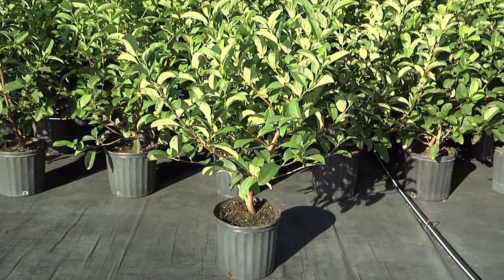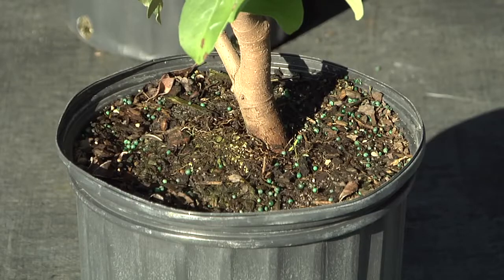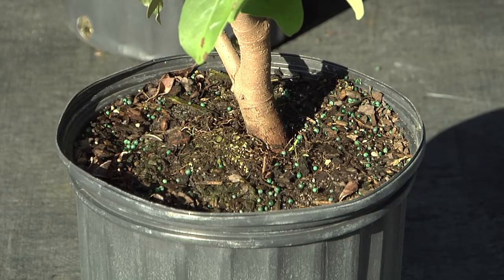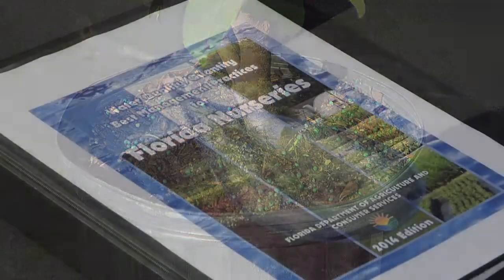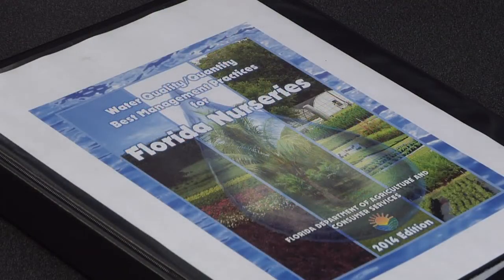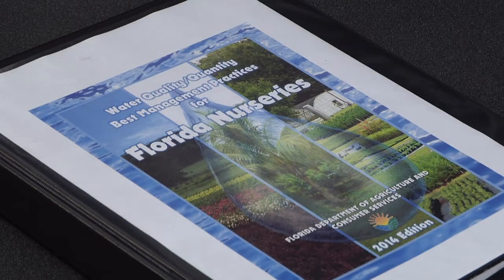Plant available water is the amount of water in the substrate that can be used by the plant. The BMP manual suggests the amount of available water be at least 25% of the substrate volume.